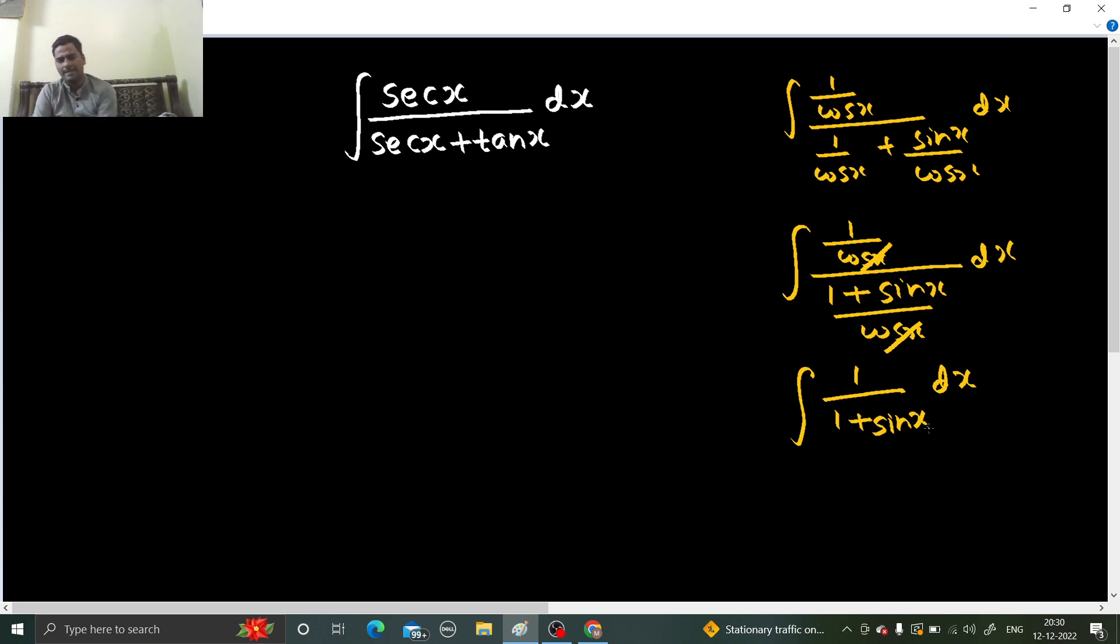Now, there again you get an integral which can be solved by rationalization easily. If you multiply this by 1 minus sine x, 1 minus sine x, you will get 1 minus sine x divided by cos square x. You can solve that easily. So now I am leaving this question here only. This method you can do that.